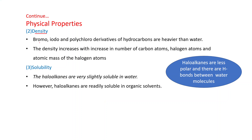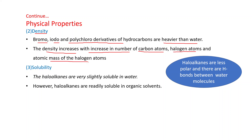Density: bromo, iodo, and polychloro derivatives of hydrocarbons are heavier than water. Density increases with increase in number of carbon atoms, halogen atoms, and atomic mass of the halogen atoms.